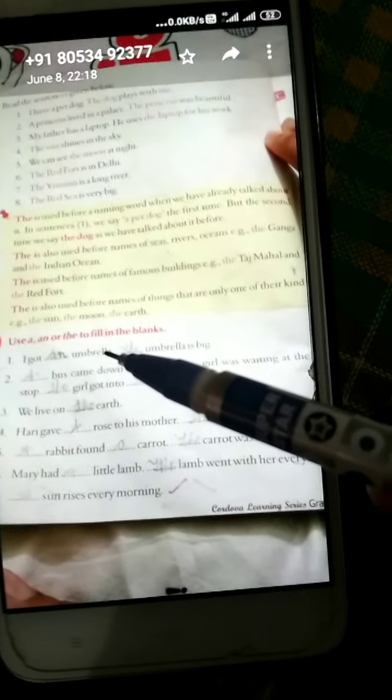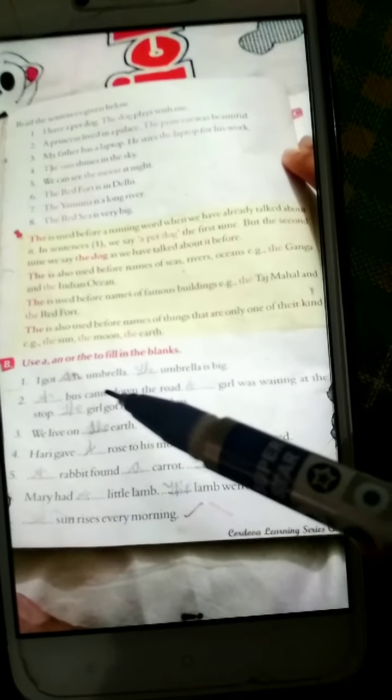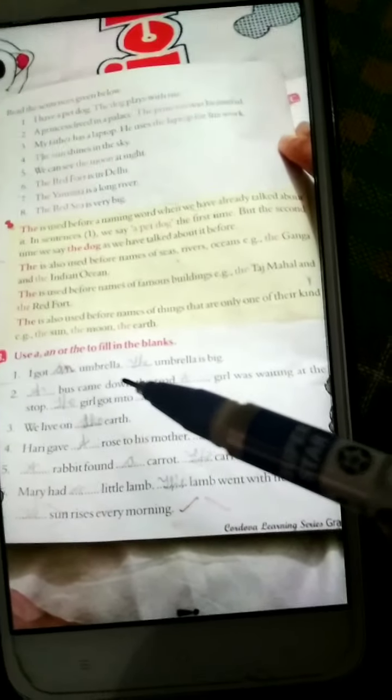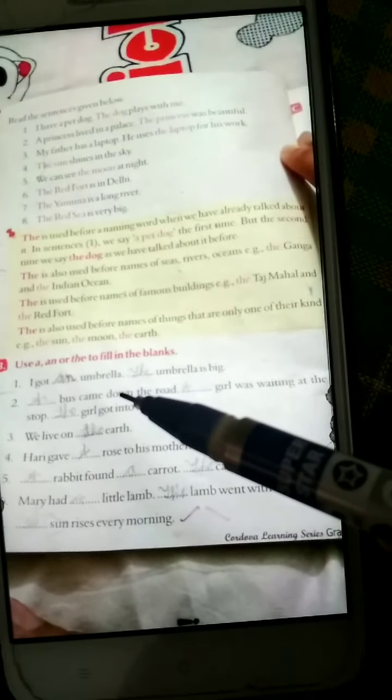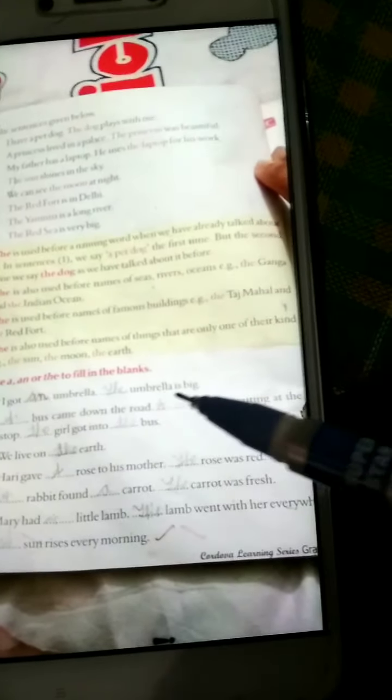I got dash umbrella. Students, you know umbrella. Check the sound. The sound is 'u' and 'u' is a vowel. With vowels what do we use? 'An'. So write here 'an'. Dash umbrella is big.